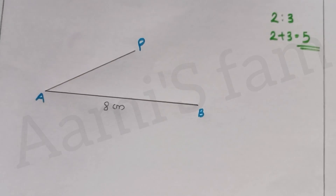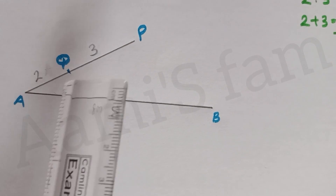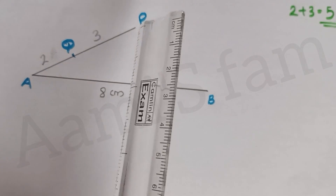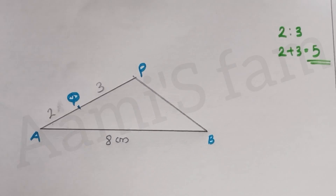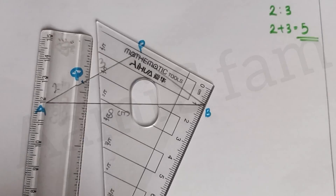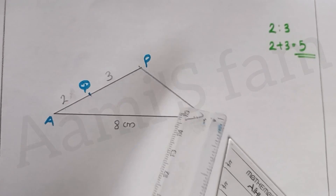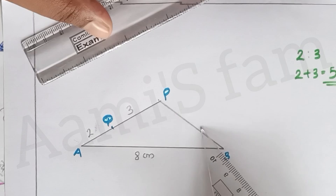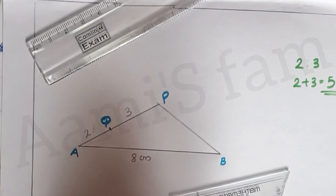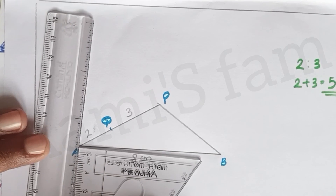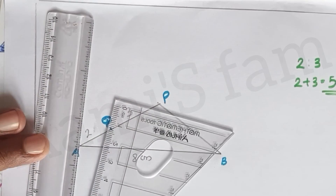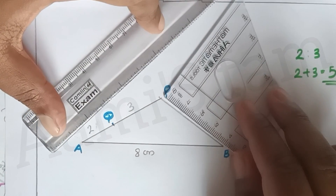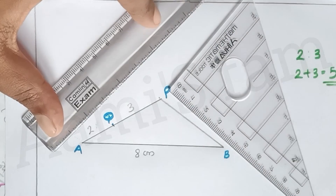We put the 8cm long line and mark the divisions. The line is divided into 5 parts. That is why we form points P and B. Now we are going to draw a parallel line with P-B. We form the construction using compass and scale, drawing a parallel line to reach the required point.